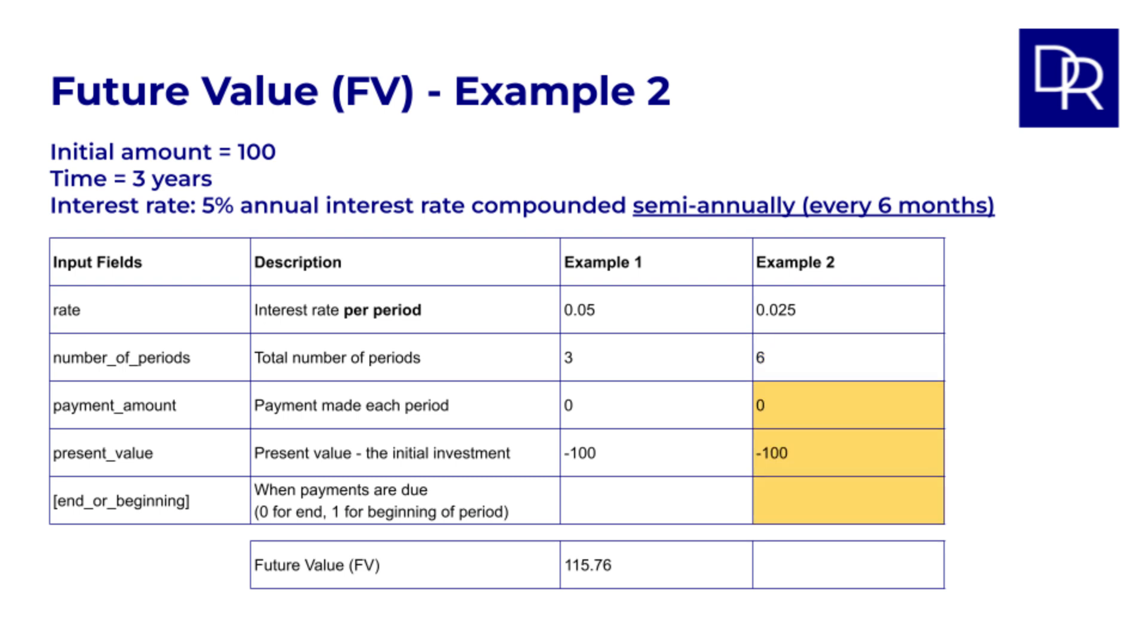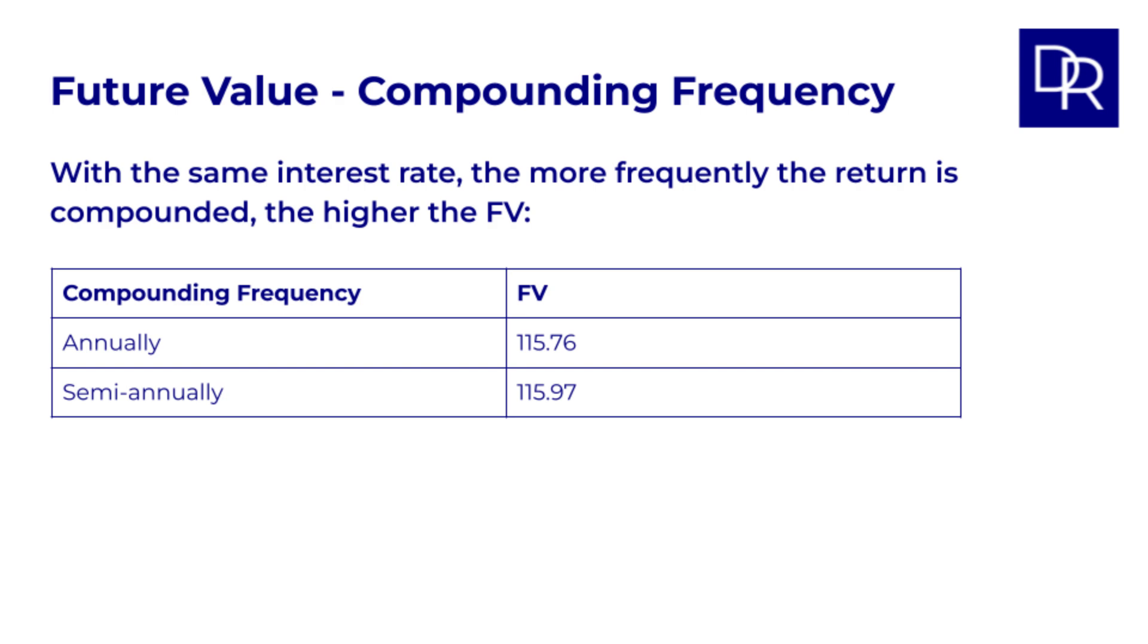The payment amount and the present value are unchanged. So equals FV 0.025, 6, 0, negative 100 gives us 115.97. Notice this is slightly higher than in example 1. The more frequently the rate is compounded, the higher the final amount.